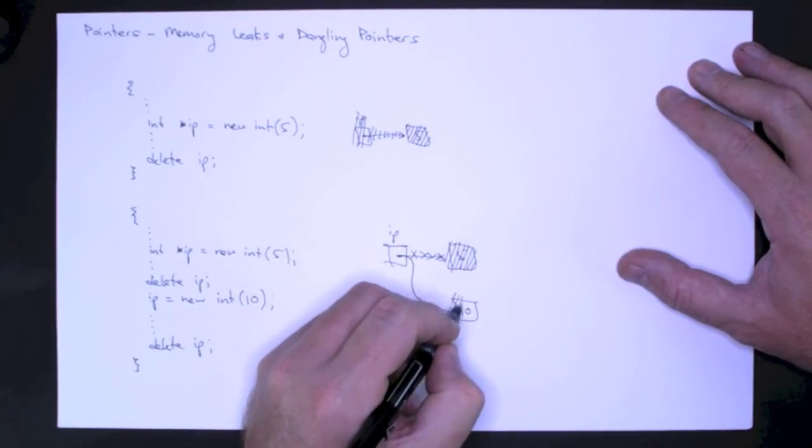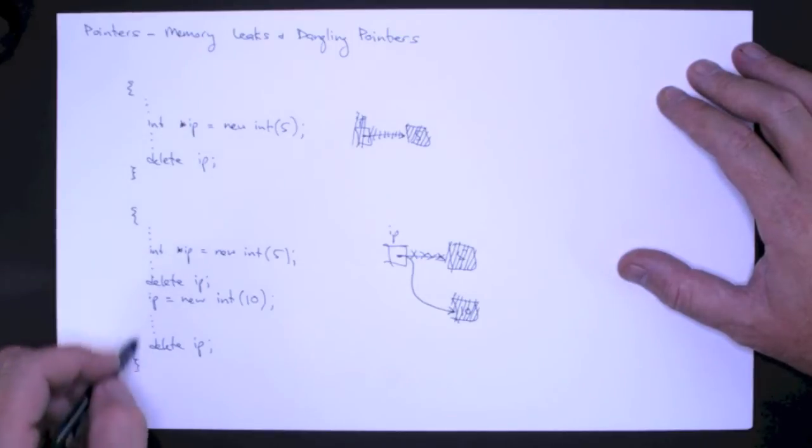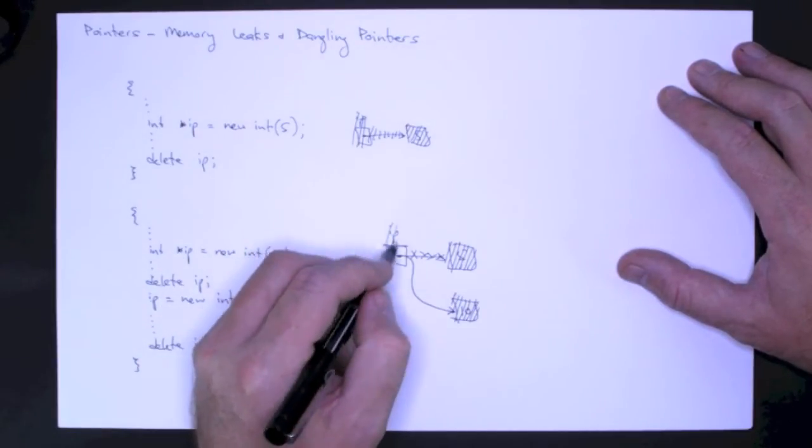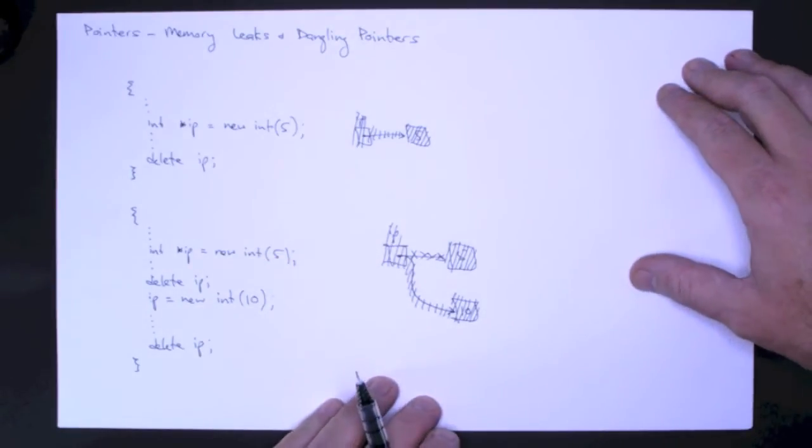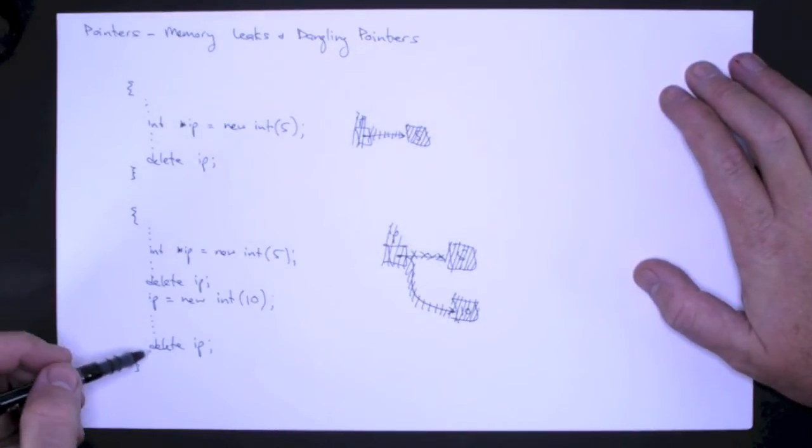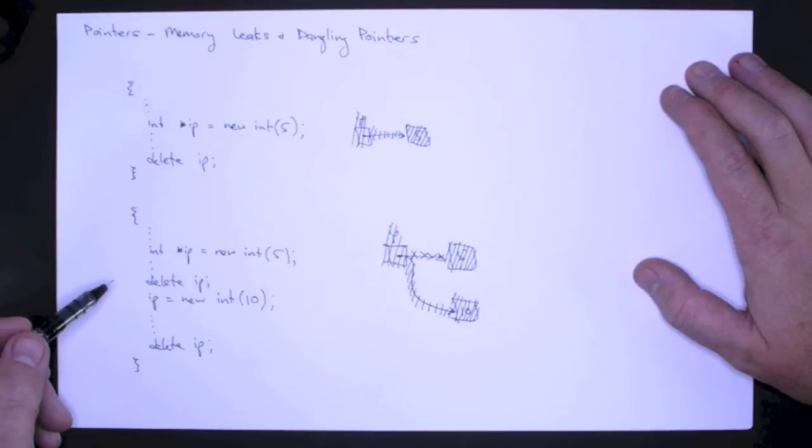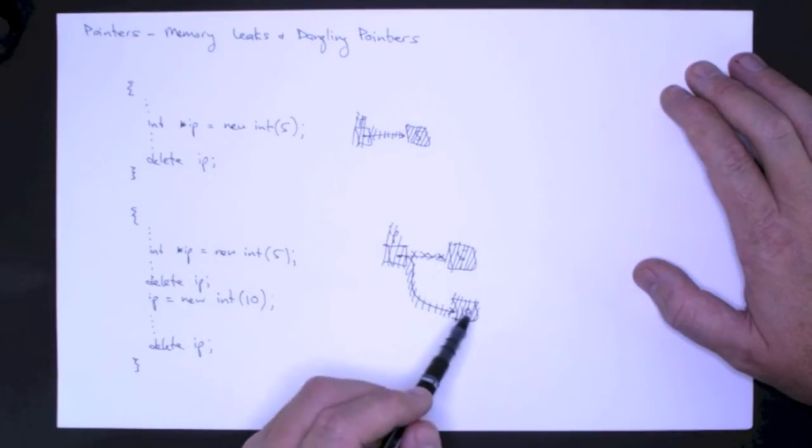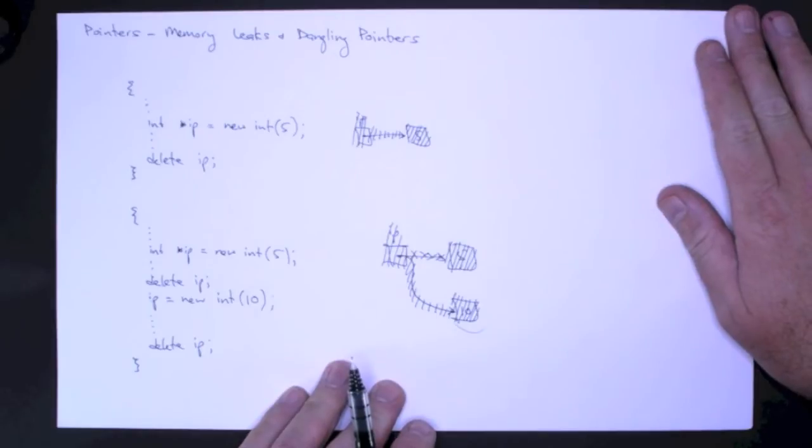When that happens, the integer 10 is deallocated. And when we leave the block in which IP is statically declared, then it will be deallocated. What makes things complicated is these deletes may not occur within this block. They just occur at some point during program execution. Nonetheless, if we don't have a corresponding delete for every new, you're going to leave integers and other objects in memory.